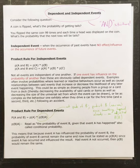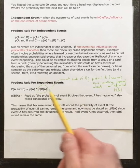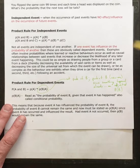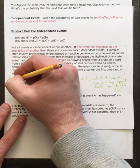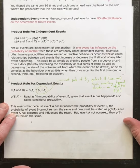We'll talk more about multiple events in future units. But for now, we compare independent events to dependent events. In a dependent event, the probability changes. When one event has influence on the probability of another, that leans towards what we call dependent events. For example, if you stub your toe, the probability of stubbing it again may change. If you get in a car accident, the probability of another changes because you'll drive differently.